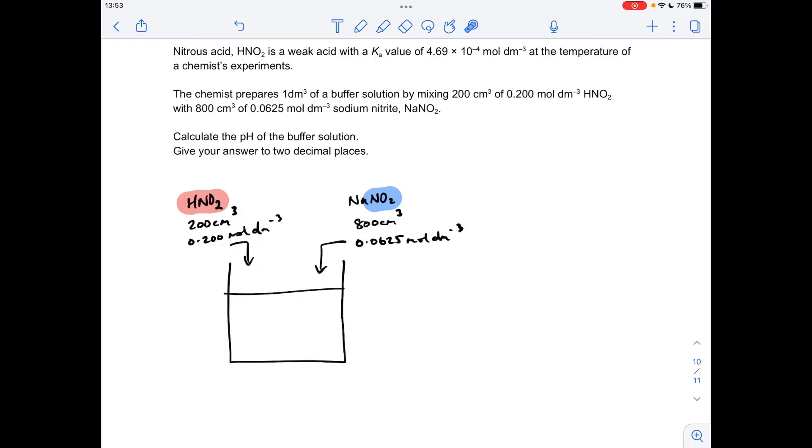Okay, so I'll make a start. I'll use this diagram to explain what's happening in the question. So the chemist's taken a weak acid and the conjugate base, so the salt, sodium nitrite is a conjugate base. They're obviously the key ingredients for a buffer, so we know the volume and concentration of each of these two components.